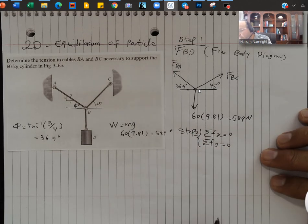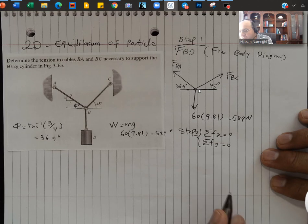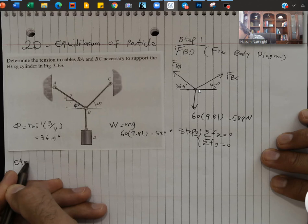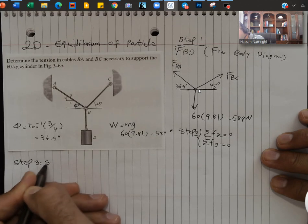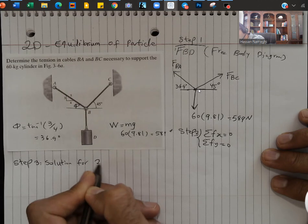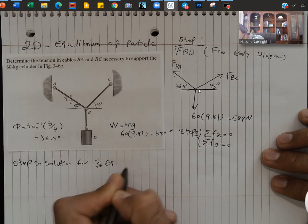If I have two equations and two unknowns, I would be able to solve it. So in step 2, I'm going to set the equations up. In step 3, we're going to find the solution for these equations. So step 3 would be the solution for two equations, two unknowns.